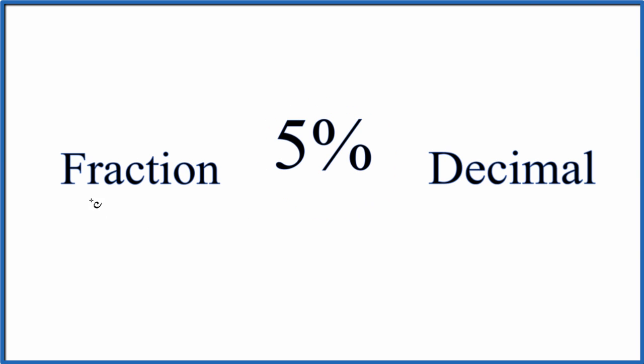Let's write 5% as a fraction and then as a decimal. So let's start off with the fraction. When we see the percent sign here, that means per 100. So we have 5 per 100.